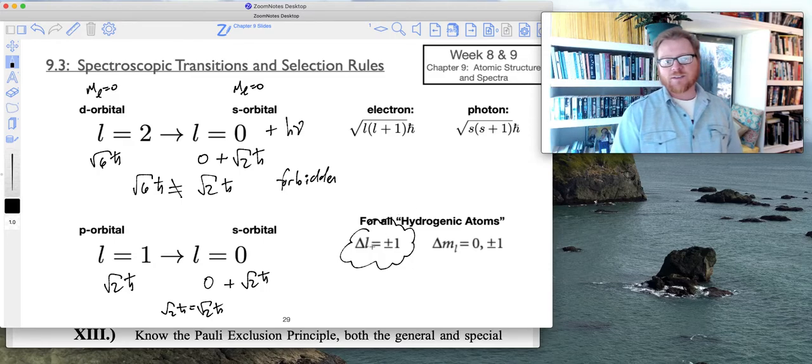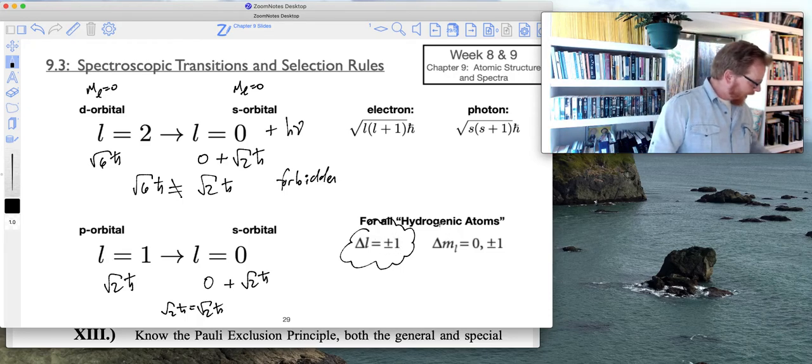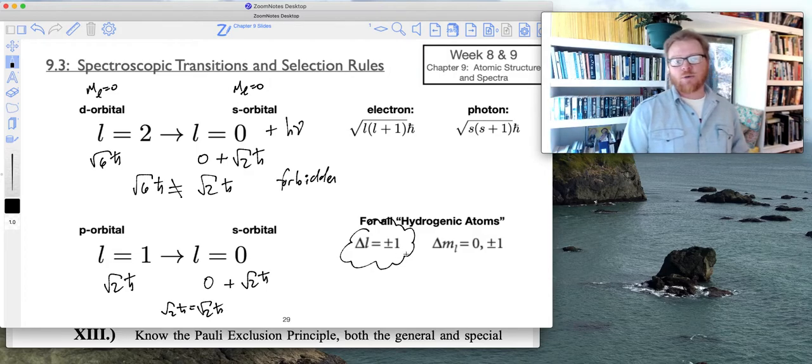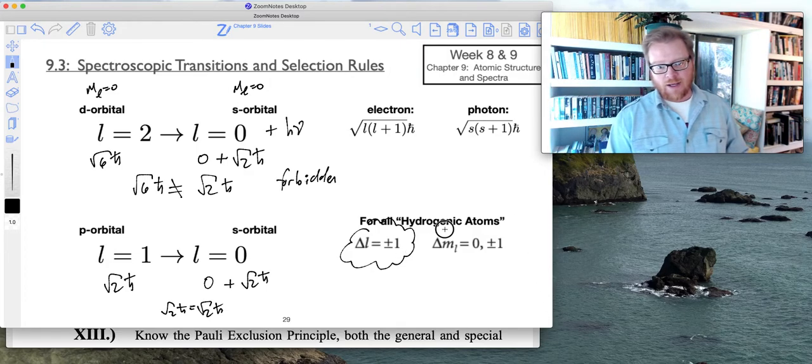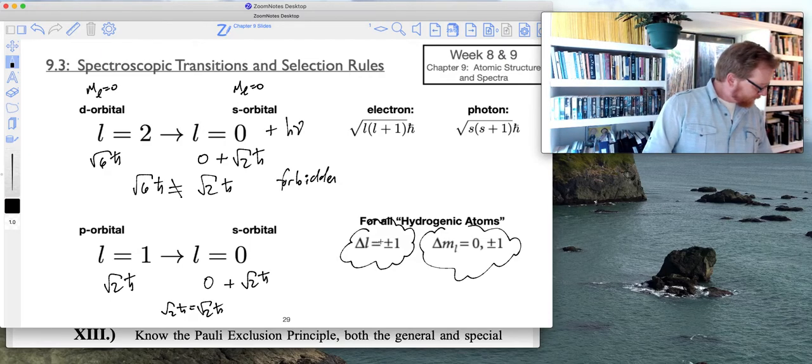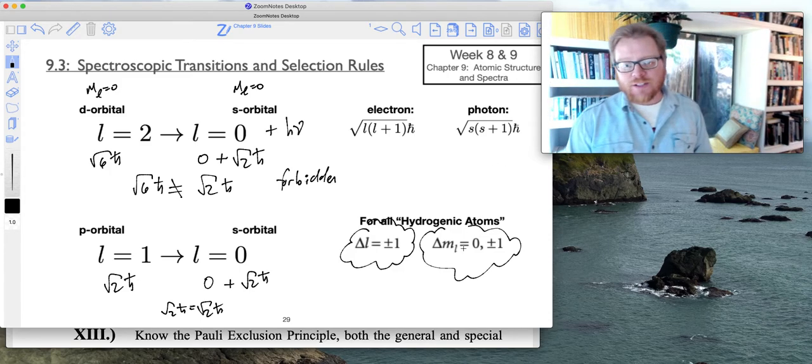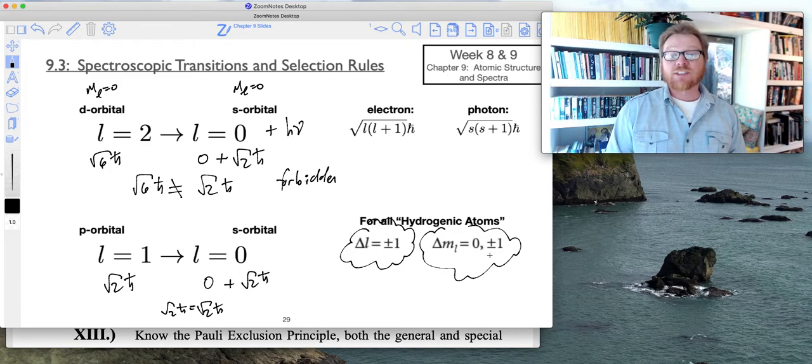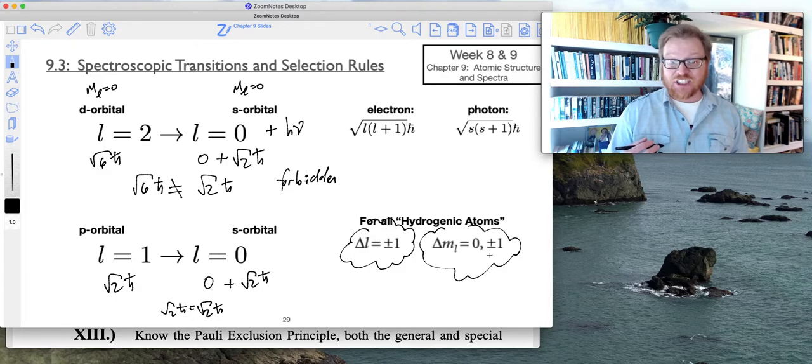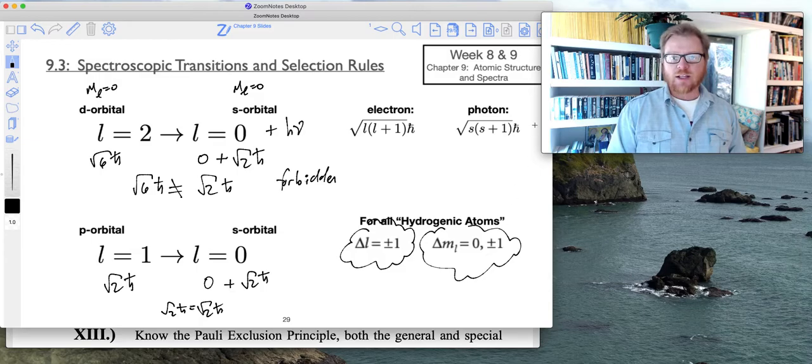So this Δl must be plus or minus 1. Additionally, m_l must equal 0 or plus or minus 1. I haven't shown that through this simple math. However, the result of this m_l equals 0, ±1 has to do with the transition dipole moment, so the dipole moment that's created when that electron transitions to a different state. Let's look at that next.